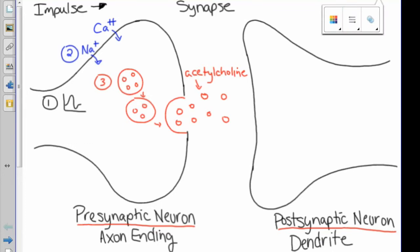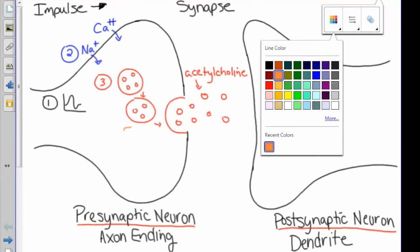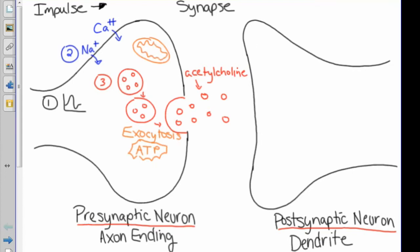The synaptic vesicles merge with the membrane in a process known as exocytosis. It's a type of active transport that requires ATP, so we also require some mitochondria in the presynaptic neuron.